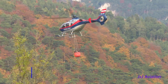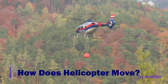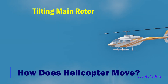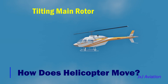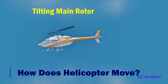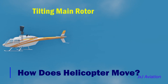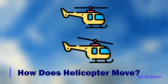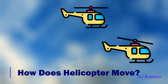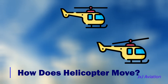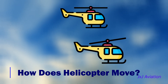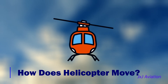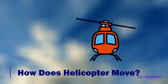How does the helicopter move in different directions? The movement of the helicopter is achieved by tilting the main rotor. The direction in which the main rotor is tilted, the helicopter will move in that direction. By tilting the rotor forward, the helicopter moves forward. Tilting it backwards will result in backward movement. Tilting it sideways will result in movement towards that side.